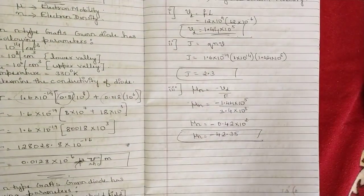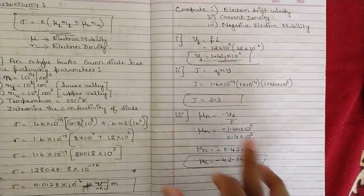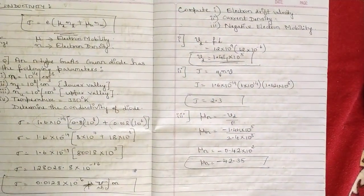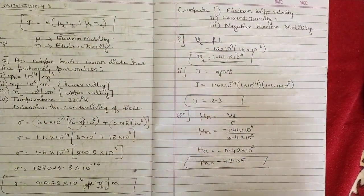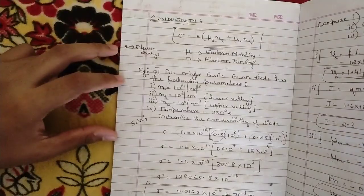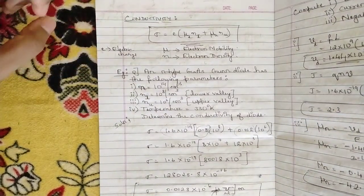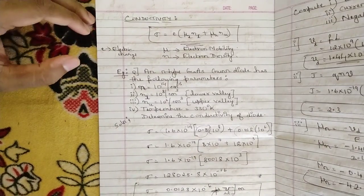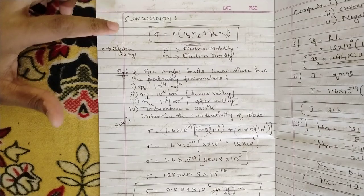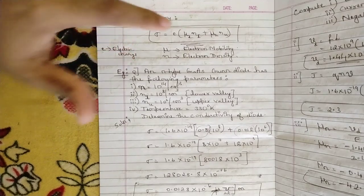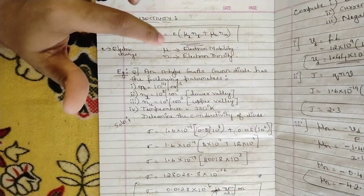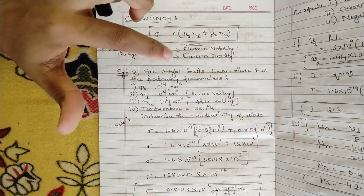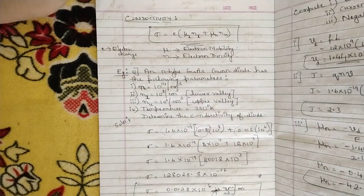There is one more problem but it is very easy and a direct problem, so it is not so important. That's all for this video — I have brushed up on the concept of gun effect with respect to the gun diode, and the concept of conductivity, where μ stands for electron mobility, n stands for electron density, and we solved one problem.